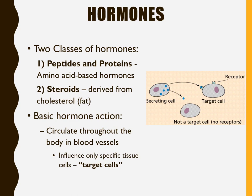Hormones circulate throughout the body in the blood vessels. Once they reach a target tissue or target cell, there's going to be a receptor on that cell that binds to the hormone. They circulate through the body looking for that receptor on the target cell, and then influence that cell for whatever function that hormone controls.